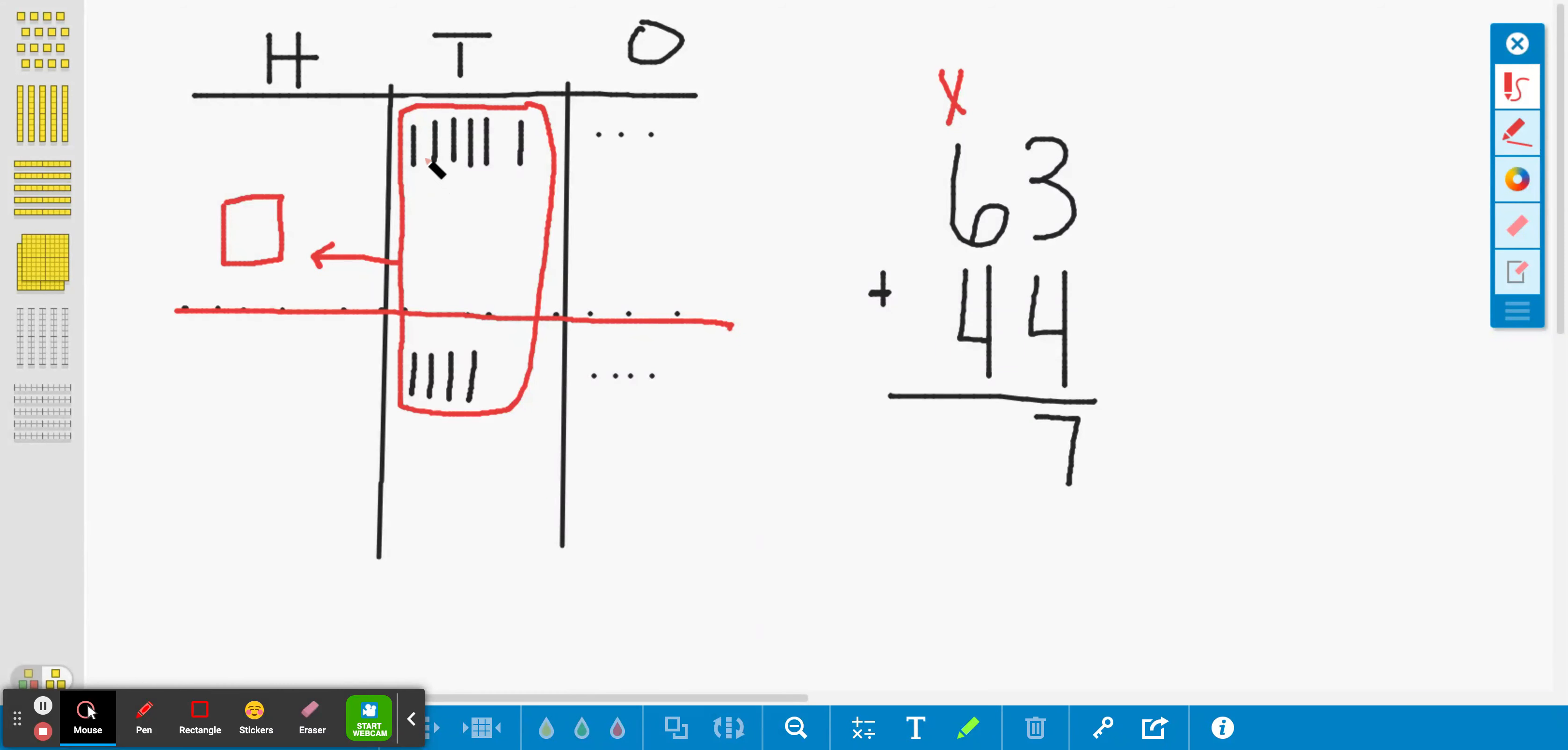So I just regrouped. What I did was I got rid of these and I can put a big fat X over the top because these went away and they went together to make this ten flat. So now I have my seven ones, but I don't have any tens. And if I want, I can put them down here. I have seven ones.